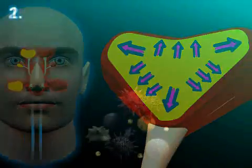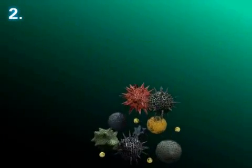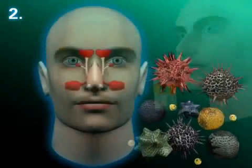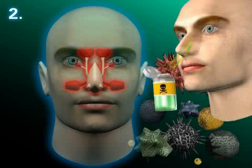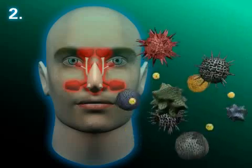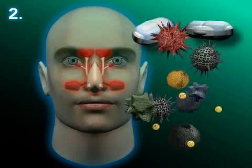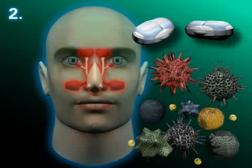Exogenic causes include everything coming from the exterior. For example, the inhalation of poisonous gases, airborne pollen, and some medications can cause damage to paranasal sinus mucosa and initiate sinusitis.